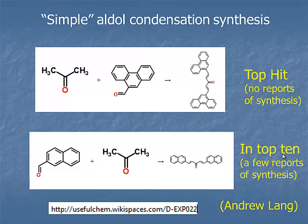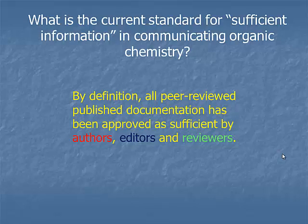The top compound had not been previously made, but the bottom one had a few reports. If we don't want to reinvent the wheel, we just want to repeat a procedure that actually exists. This is a classic case of what happens when a chemist tries to repeat an experiment and finds literature. So what is the current standard for sufficient information when communicating organic chemistry?